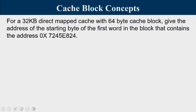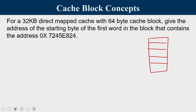The first question is: for a 32KB direct mapped cache with 64-byte cache blocks, give the address of the starting byte of the first word in the block that contains address 0x7245E824. In a direct mapped cache, multiple blocks exist, and when you bring data from main memory, you transfer a block of data into a particular cache block.